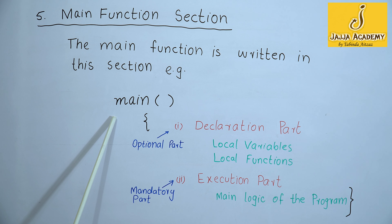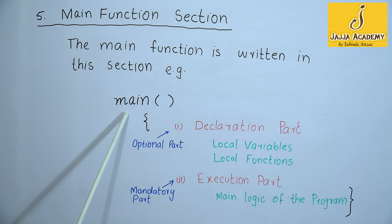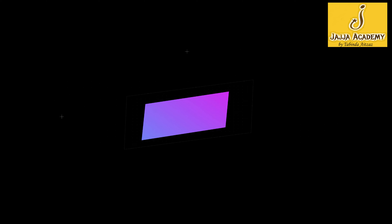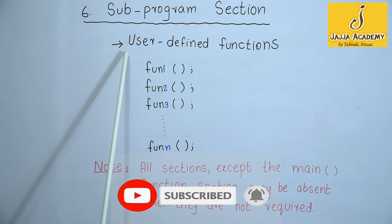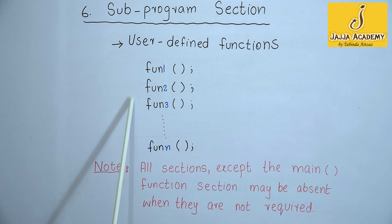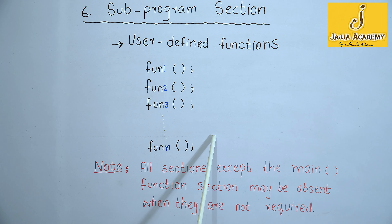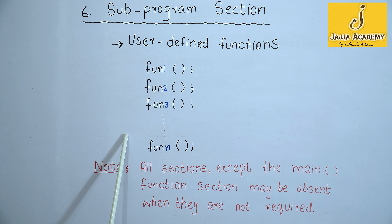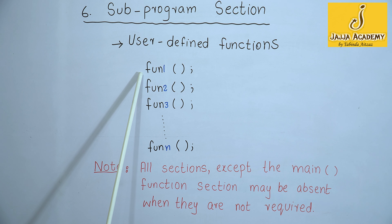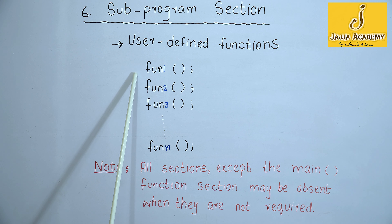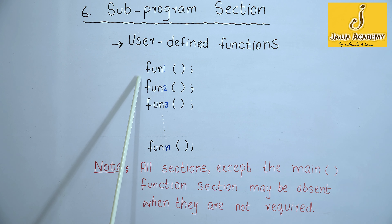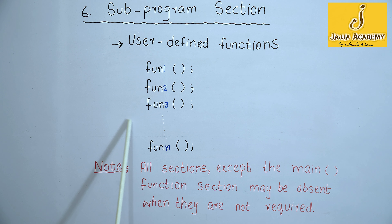The main function is basically the entry point of any C or C++ program — this is the point from where execution of a program starts. Let's move to the last section: the subprogram section. The subprogram section contains all the user-defined functions that are called in the main function. User-defined functions are generally placed immediately after the main function, although they may appear in any order. For example, function 1, function 2, function 3, and so on — their order can be changed as the order of writing functions doesn't matter.